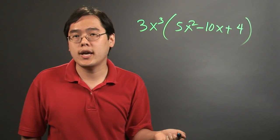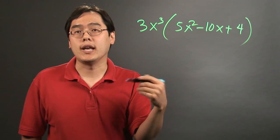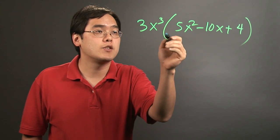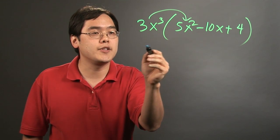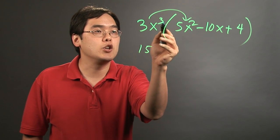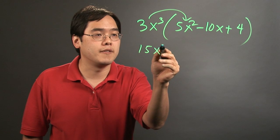you're just multiplying and distributing and multiplying the integers along the way. So for example, when you're multiplying 3x cubed times 5x squared, you're multiplying the 3 and the 5, that's going to be 15. x cubed times x squared, that's going to be x to the fifth.